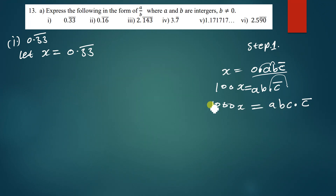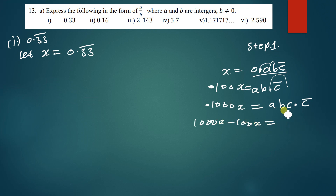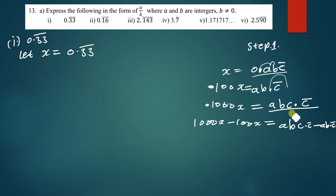Now subtract the first equation from the second: 1000x − 100x = abc.c̄ − ab.c̄. This allows you to eliminate the repeating decimal part, then make x the subject of the formula to find the solution.